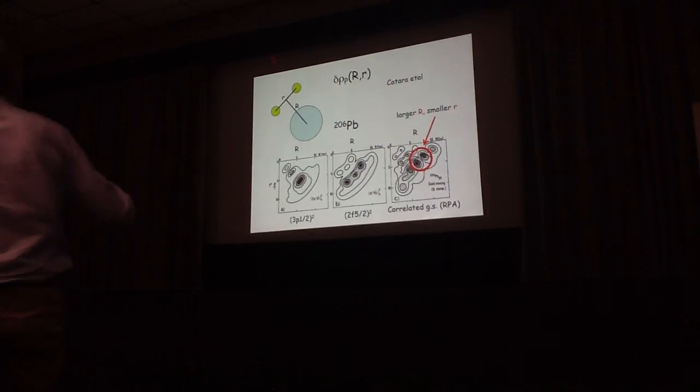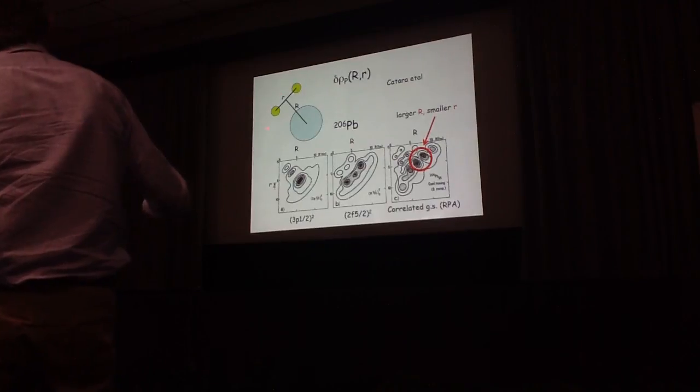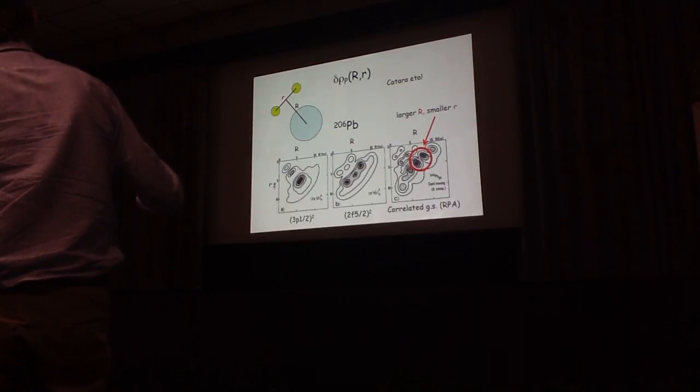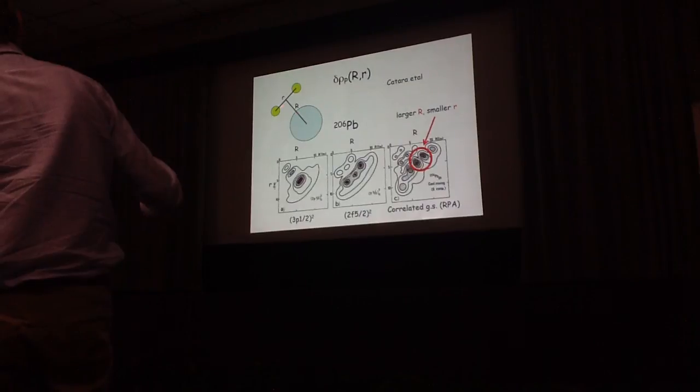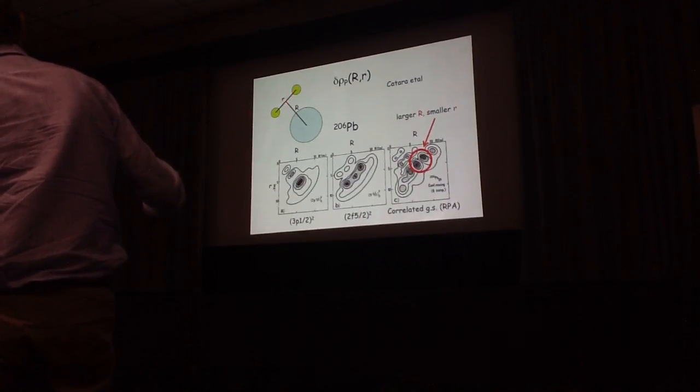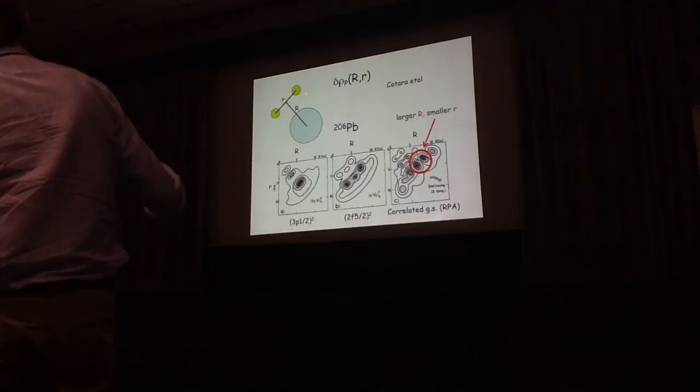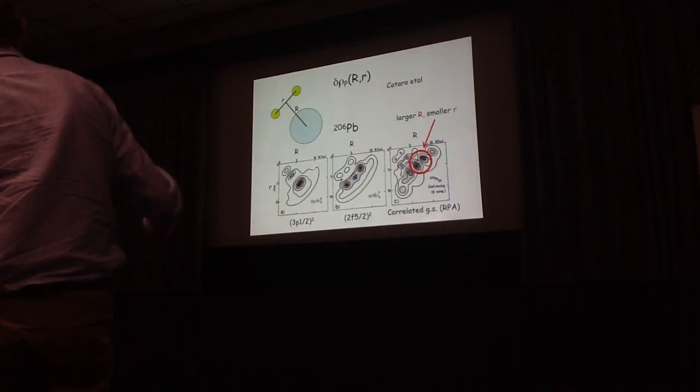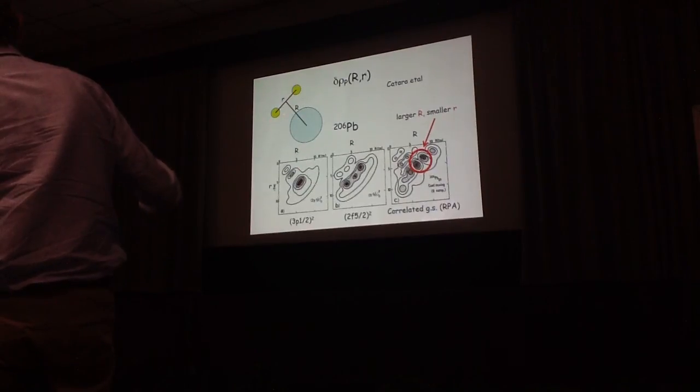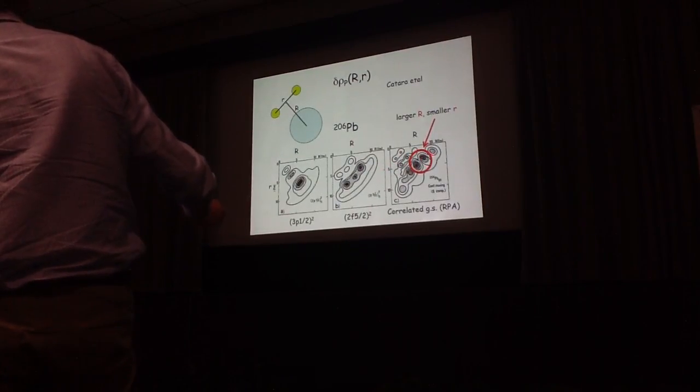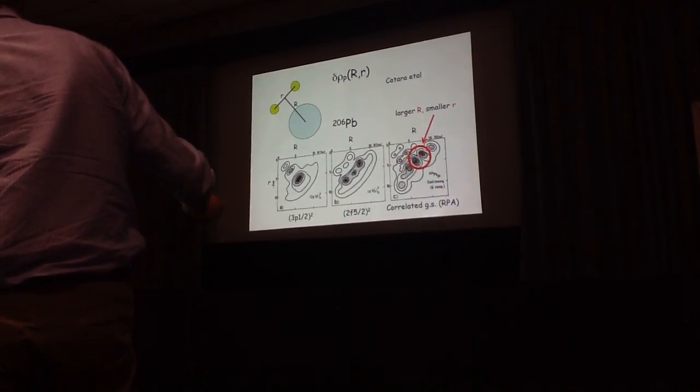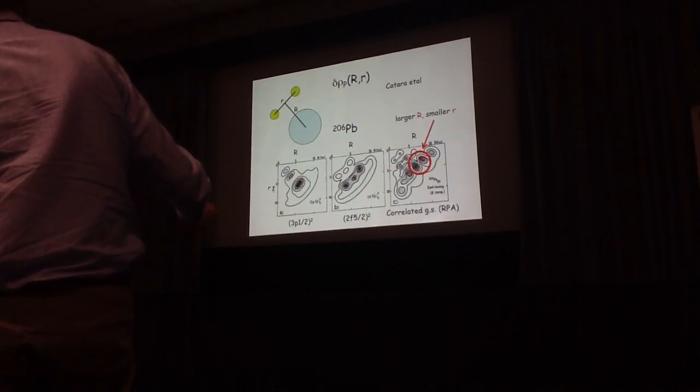The same thing you can look at by, for example, you take the wave function of the two-particle, and then you plot the two-particle wave function as a function of the center of mass distance R and the relative distance small r. If your two particles are in a single-particle orbit, then you get equal probability of having capital R or small r. But if you put correlation, then the correlation tends to clusterize the two particles into smaller volume of smaller r and larger value of R.